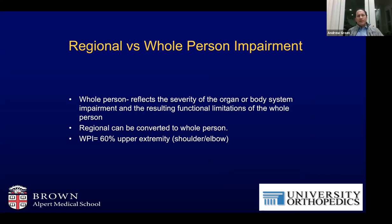We also look at impairment as either regional or whole person impairment. In my experience, workers' compensation carriers are looking for upper extremity impairment, but there is a whole person impairment as well. This reflects the severity of the organ or body system impairment and its resulting functional limitation on the whole person. An upper extremity disorder involving the shoulder and elbow can be converted to whole person by multiplying by 0.6 or 60%. I find this somewhat controversial, as these percentages applied to different disorders are somewhat arbitrary.